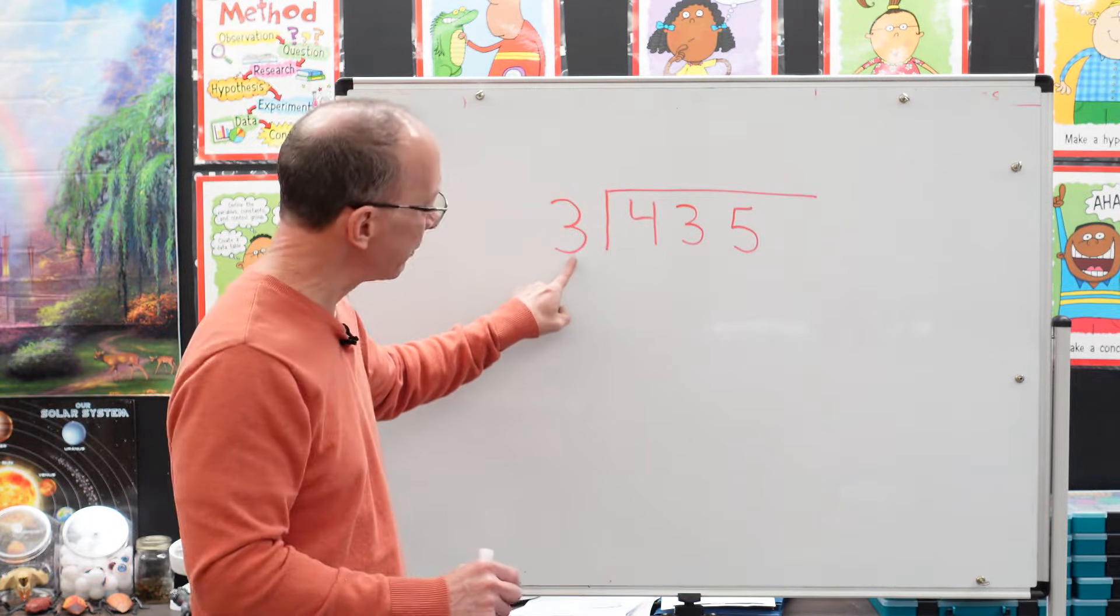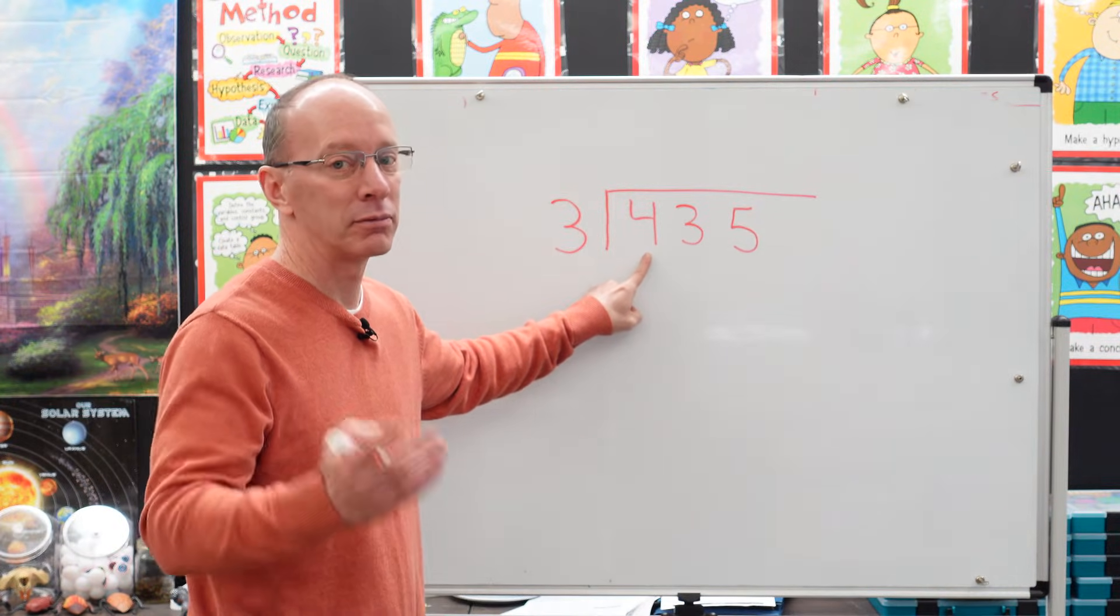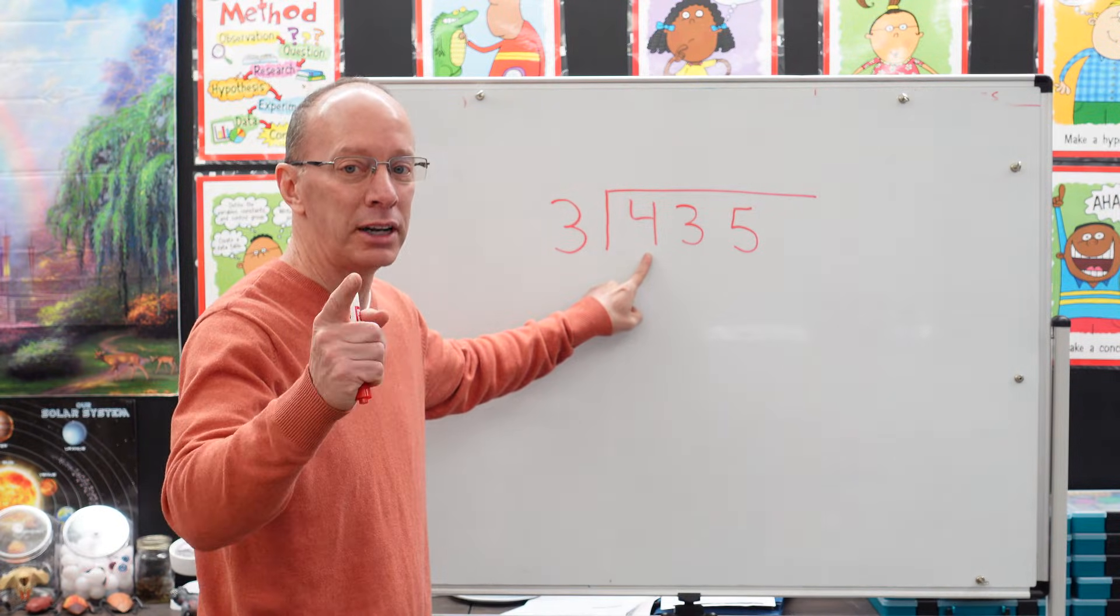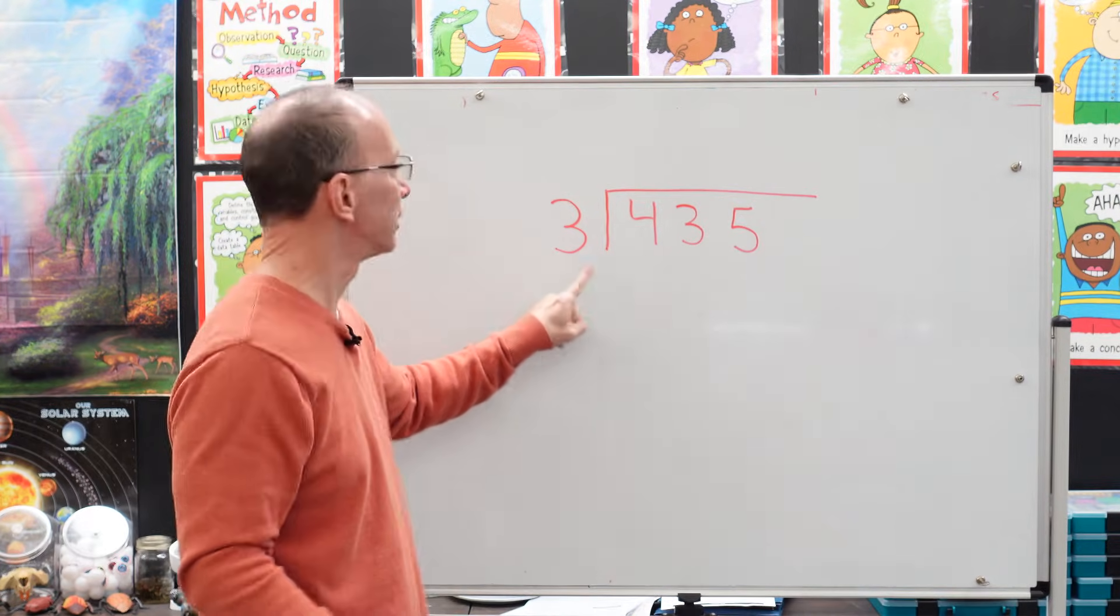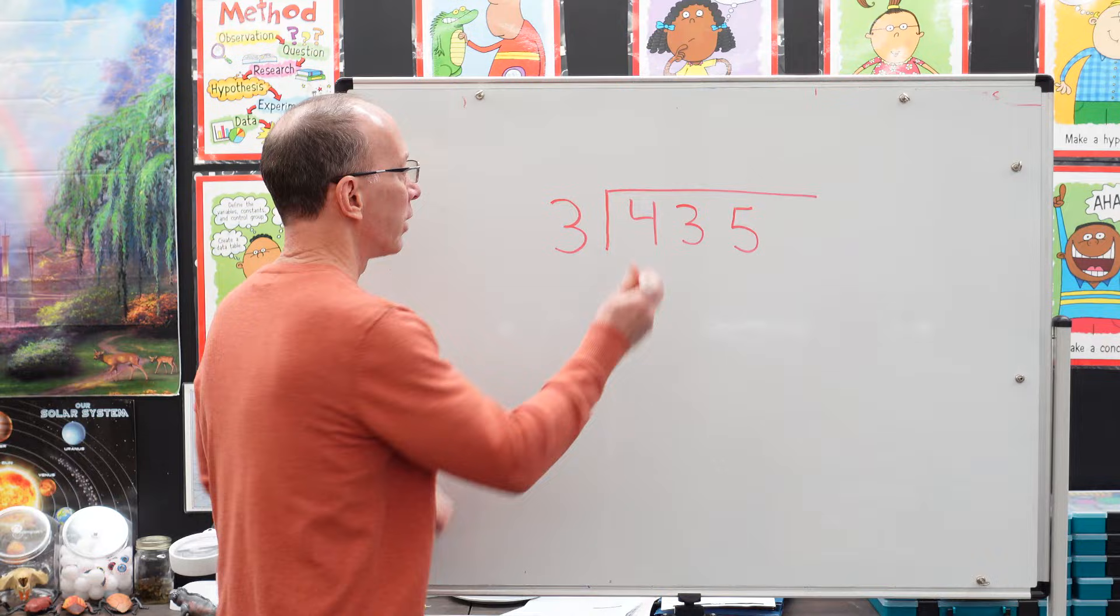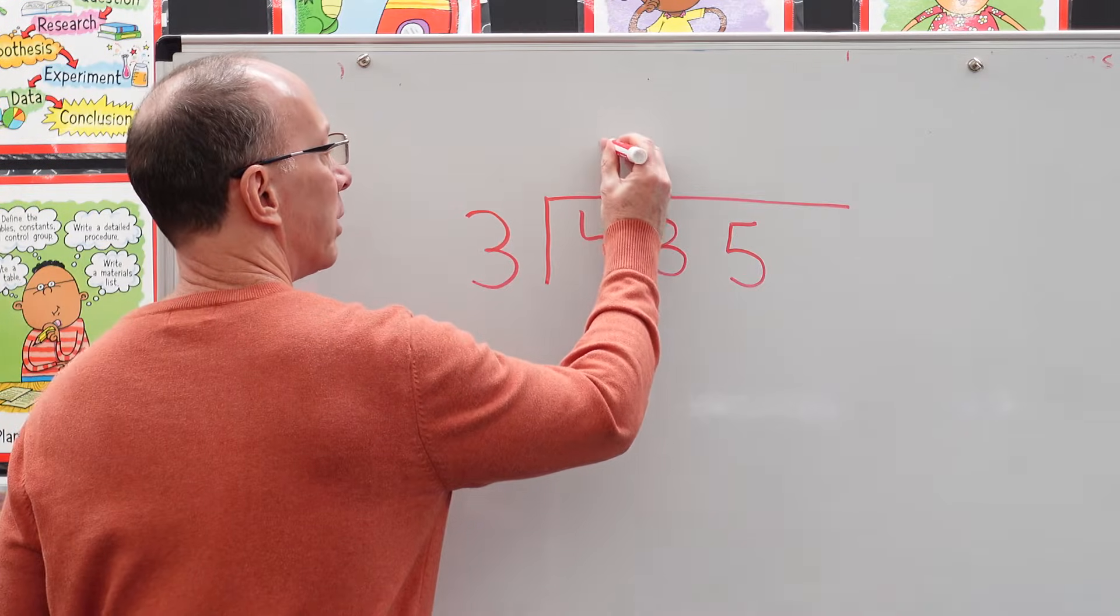So first of all, how many times can I put three into four? Let's try it. Three times one is three. Three times two is six. Six is too big. Can't do it. Stay with three times one. So I put the one directly above the four.